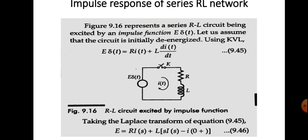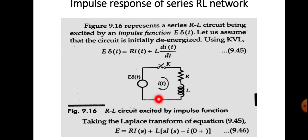Next, we find the impulse response of a series RL circuit. In the previous discussion we took the series RC circuit; here we take a series RL circuit. The series RL circuit is connected to the source through a switch K. At time T equal to 0 the switch is closed; the initial charge stored in the inductor is assumed to be 0. When the impulse function is applied, a current is produced, so the response is current I(T). The KVL equation is: E·δ(T) = R·I(T) + L·dI(T)/dt.